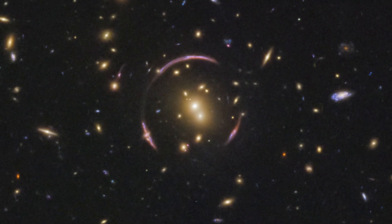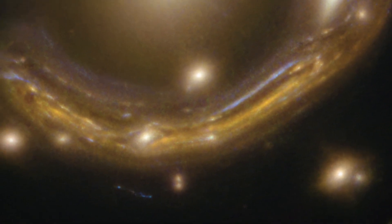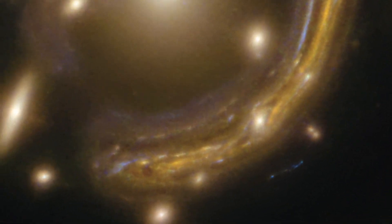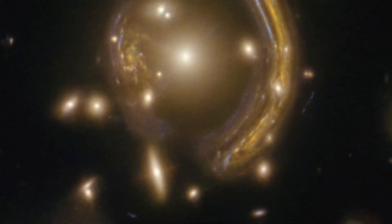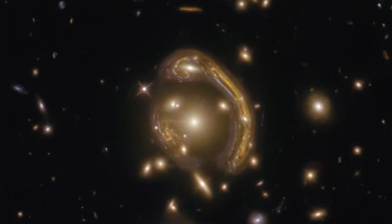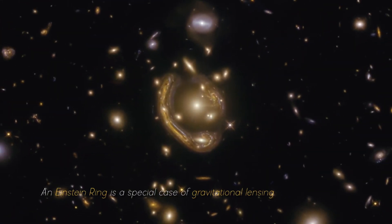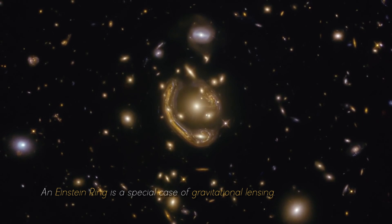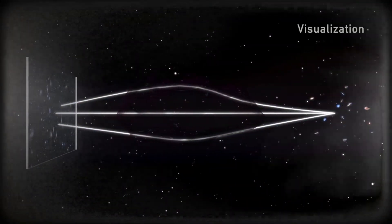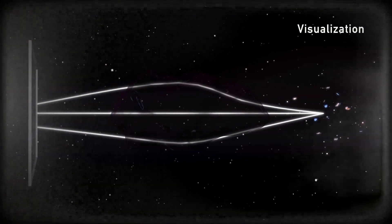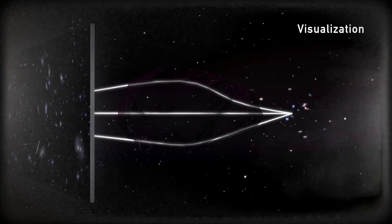What is an Einstein Ring and how is it formed? Before diving into the details of the fossil galaxy, it is important to understand the basics of this phenomenon. An Einstein Ring is a special case of gravitational lensing, a phenomenon predicted by Albert Einstein's general theory of relativity. According to this theory, gravity is interpreted as the curvature of space and time due to the presence of mass.